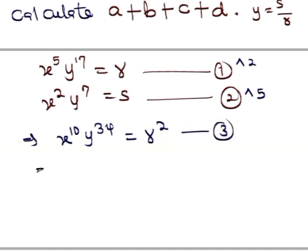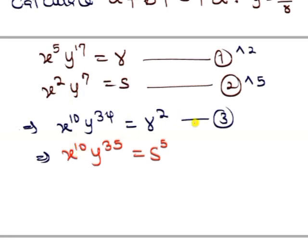And if I raise equation 2 to the power of 5, I will get x^10 * y^35 = s^5. Remember that the power is going to multiply the already existing powers. So at this time, this can be called equation 4.